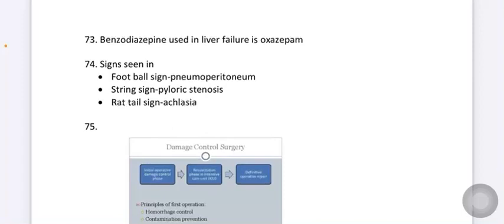Match the following question is given. Signs seen in which condition. Football sign seen in pneumoperitoneum. String sign seen in pyloric stenosis. Rat tail sign seen in achalasia.